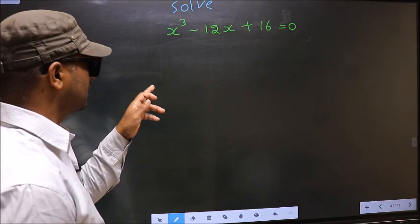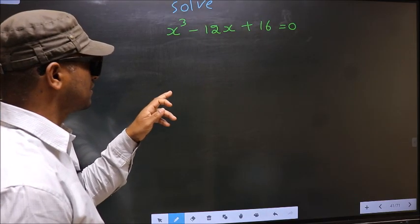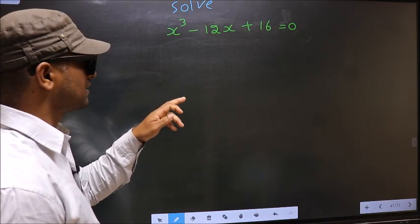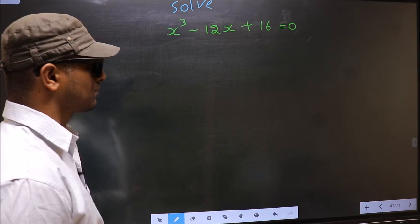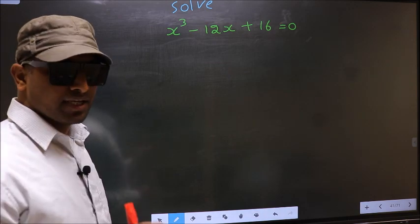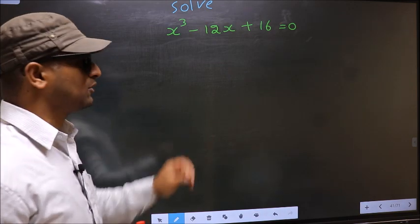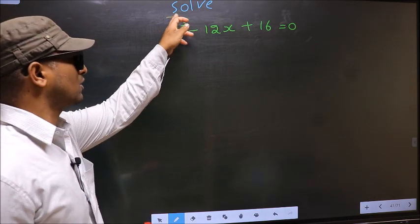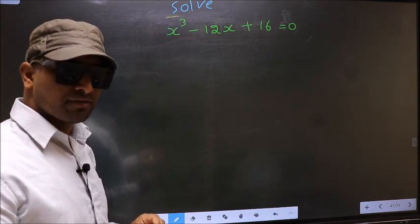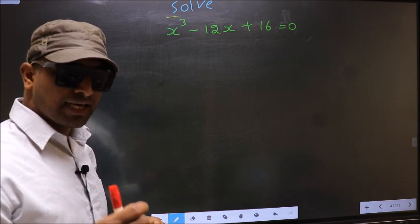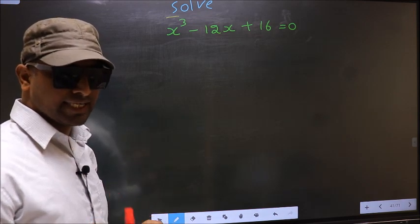Solve x cube minus 12x plus 16 equal to 0. Here they told us to solve, which means we should get the values of x.